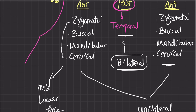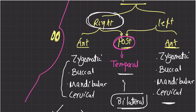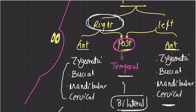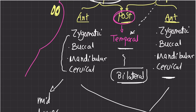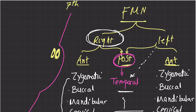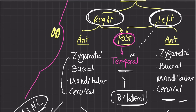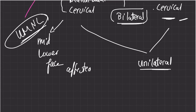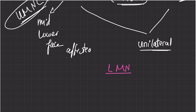To summarize: if the right facial nucleus is affected, the zygomatic, buccal, mandibular, and cervical branches are definitely affected — meaning the mid-face and lower face will be affected. However, the temporal nerve, which takes impulses bilaterally, will not be affected, because if the left side is damaged, the right side covers it. This is what we call an upper motor neuron lesion — the ipsilateral upper quadrant of the face is spared.